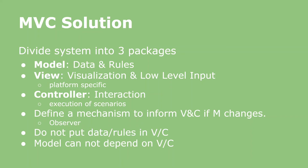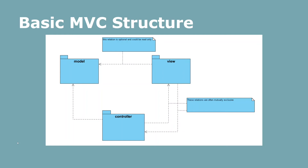Often we use the observer pattern here, but we will talk about that later. There are two basic rules: we should not put any data or business logic in the view or controller, and the model cannot depend on the view or controller. So the basic structure of the Model View Controller then contains three packages: the model, the view, and the controller.